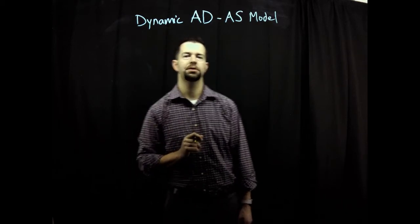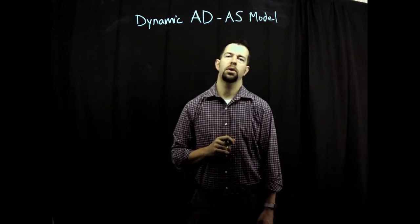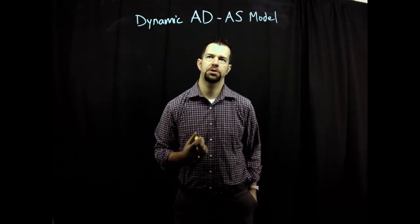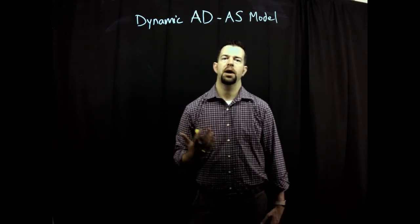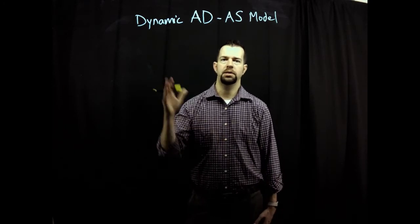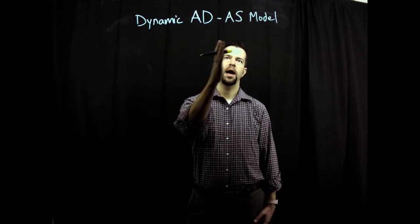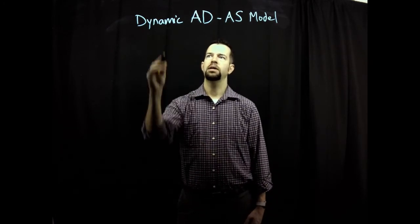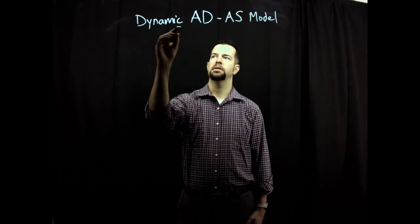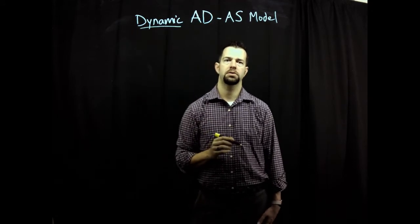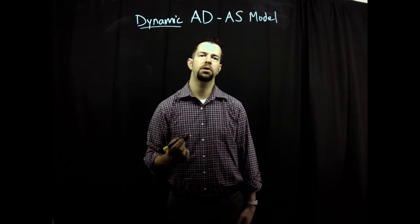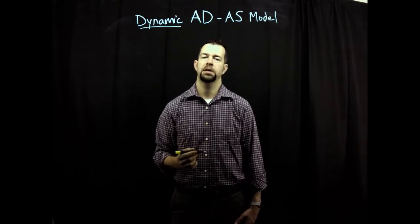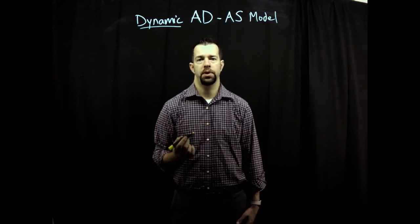Hello students and welcome to our chapter on business fluctuations. I'm going to derive for you the dynamic aggregate demand aggregate supply model. The key word here is the dynamic feature, because when we put things on the graph you're normally used to seeing levels, but we're actually going to be expressing growth rates here.